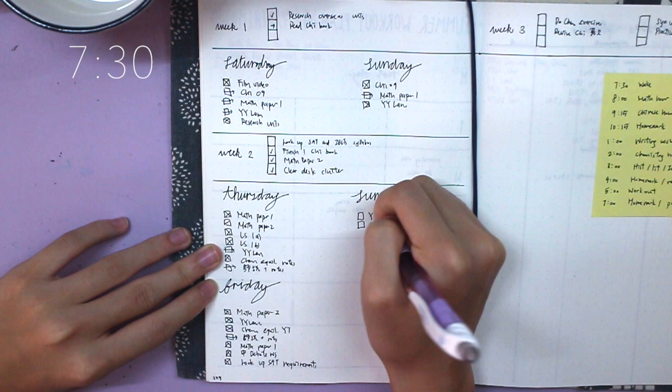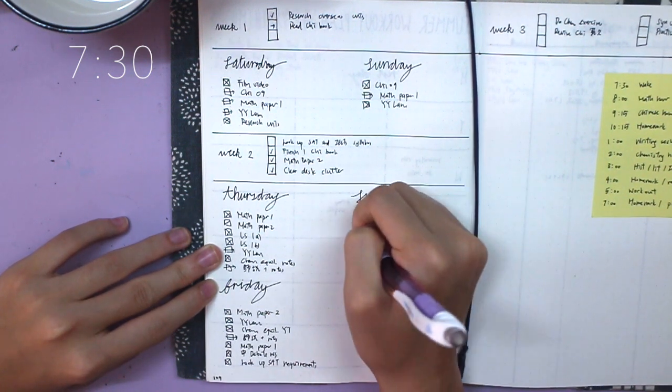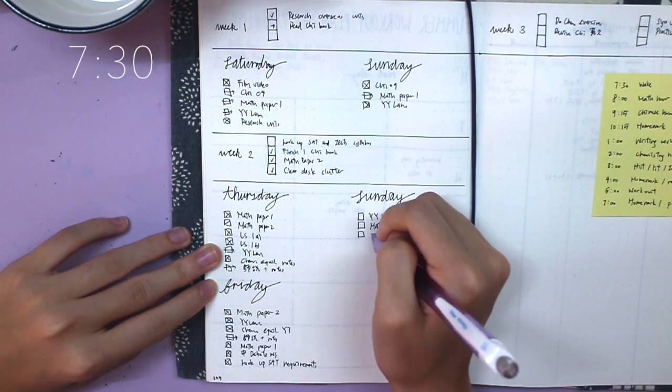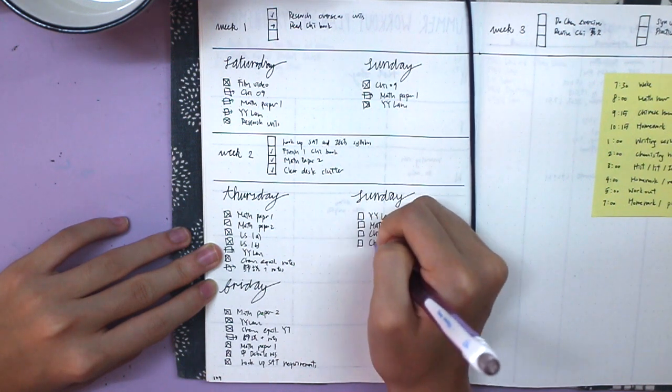During the summer, I usually wake up at 7:30, which is already one hour later than my normal wake-up time for school, but I try to wake up as early as I can because having an early start to my day really helps me get more stuff done. I feel more energized in the morning.